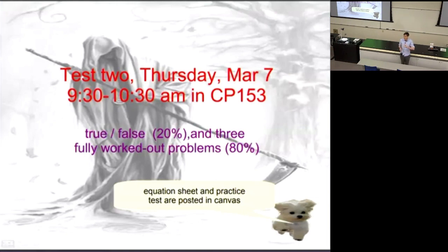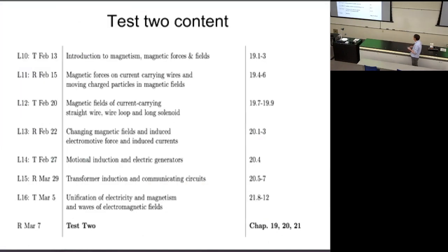A reminder about Test 2: it is exactly one week from now and will cover all material since Test 1 — magnetism, induction, and what we cover today and next class. The format is the same as Test 1: ten true-false questions worth 20 points and three long problems worth 80 points. The formula sheet and practice test are both online in Canvas modules, and you'll go through the practice test in Monday's recitation.